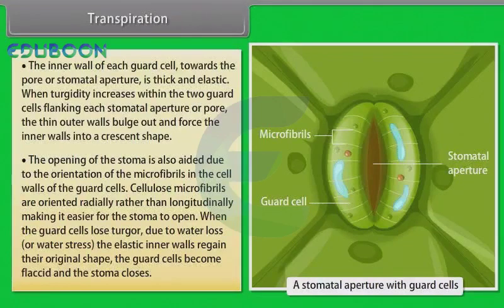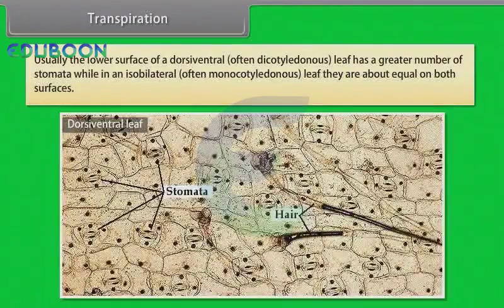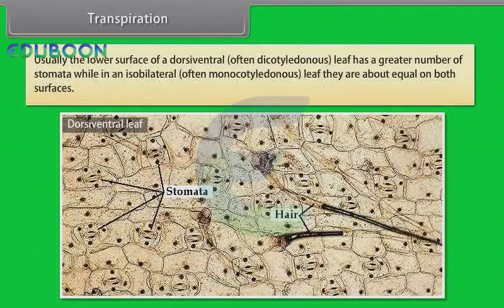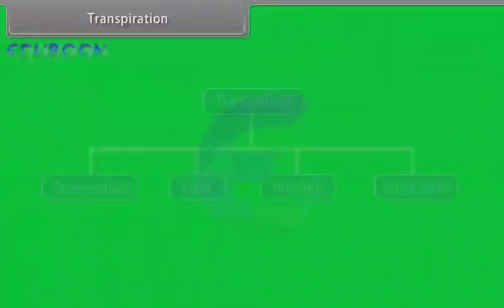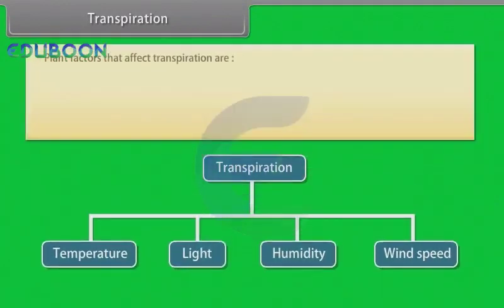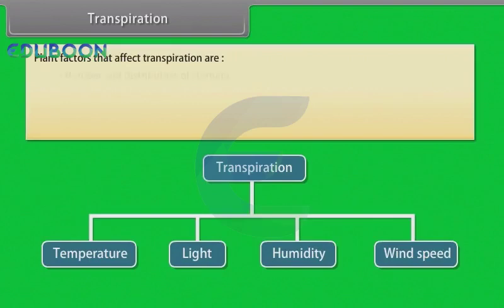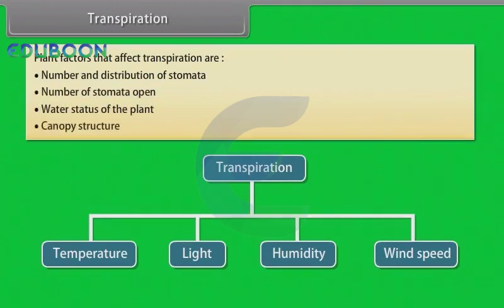When the guard cells lose turgidity due to water loss or water stress, the elastic inner walls regain their original shape, the guard cells become flaccid and the stoma closes. Usually the lower surface of a dorsiventral or often dicotyledonous leaf has a greater number of stomata, while in an isobilateral or often monocotyledonous leaf they are about equal on both surfaces. Transpiration is affected by several external factors like temperature, light, humidity, and wind speed. Plant factors that affect transpiration include number and distribution of stomata, number of stomata open, water status of the plant, and canopy structure.